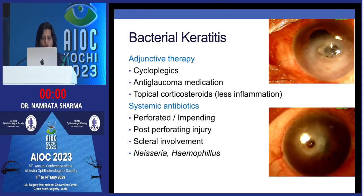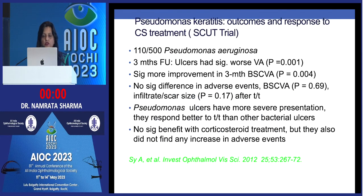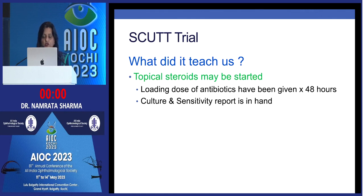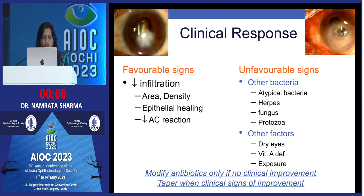Adjunctive therapy includes cycloplegics and anti-glaucoma medications. Systemic antibiotics are classically indicated for perforations, post-perforations, scleral involvement, and Neisseria and Haemophilus infections. The SCUT trial (Steroids for Corneal Ulcer Trial from Aravind Eye Hospital) showed non-Nocardia keratitis and severe Pseudomonas keratitis did better with topical steroids. Topical steroids may be started once culture and sensitivity is in hand and a loading dose of antibiotics has been given for 48 hours, but never for fungal keratitis, atypical mycobacterial keratitis, or Nocardia keratitis.